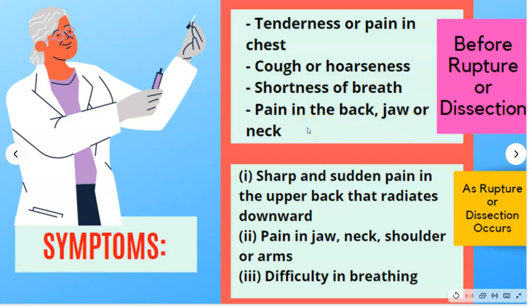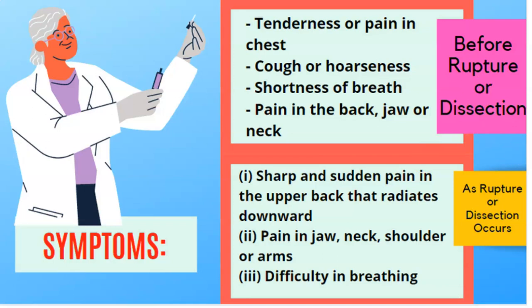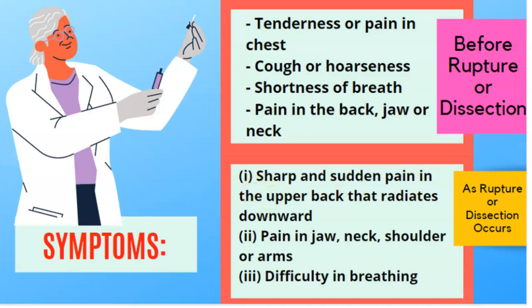When rupture or dissection occurs — where blood is spilling within the artery wall layers in dissection, or bursting and bleeding inside the body in rupture — someone suddenly experiences a sharp and sudden pain in the upper back that radiates downward. There may also be pain radiating to the neck, shoulder, and arms, as well as difficulty breathing.